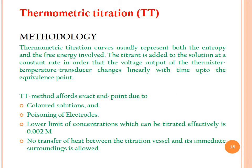Regarding methodology: in thermometric titration curves, both entropy and free energy changes are represented. The titrant is added to the solution at a constant rate so that the voltage output of the thermistor temperature transducer changes linearly with time up to the equivalence point. TT affords exact endpoints even with colored solutions or where electrode poisoning occurs—limitations of other titrations. The lower limit of concentration that can be titrated effectively is as low as 0.002 M (2 mM), and no transfer of heat between the titration vessel and its surroundings is allowed.